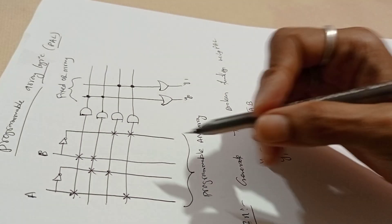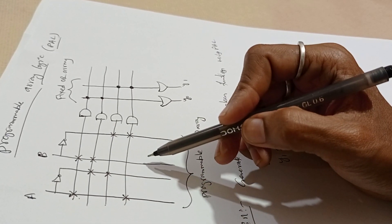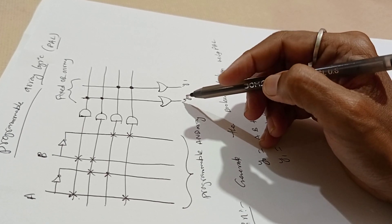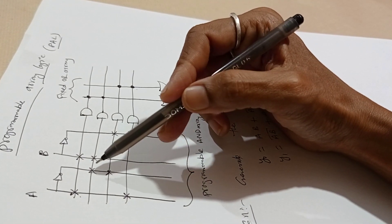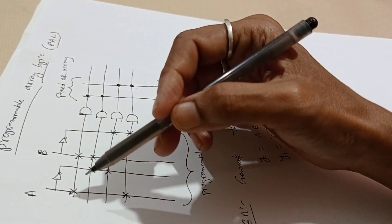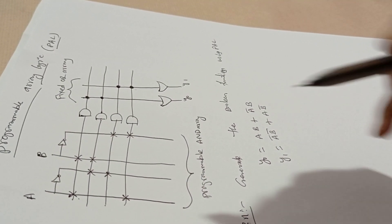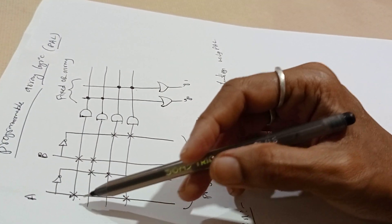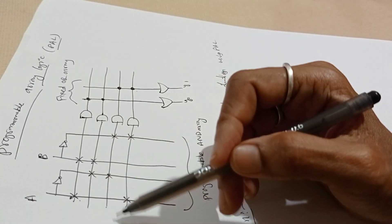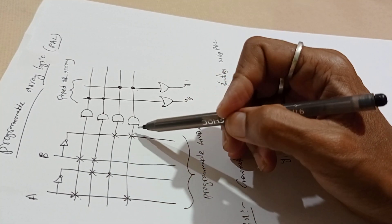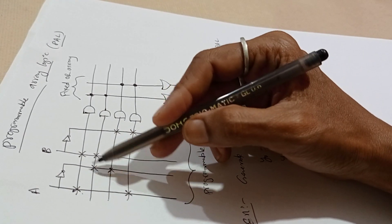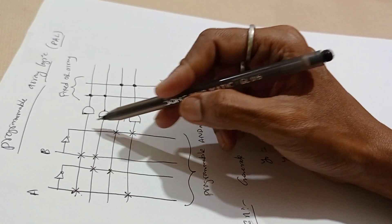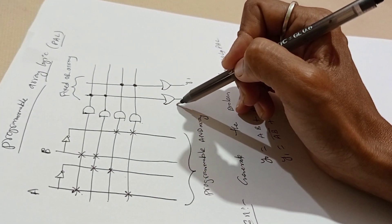Now we will see PAL. Here we can program the AND gate but the OR gate is fixed. Fixed connections are always represented with dot, and programmable fusible connections use cross. Here we are considering two inputs A and B, with A bar and B bar. Take connections from all the inputs and connect with AND. This is programmable AND array. If you have two inputs A and B, you will get all four combinational AND gates.